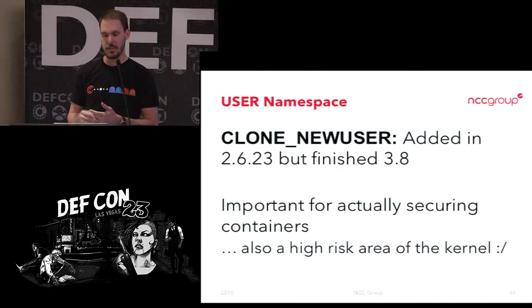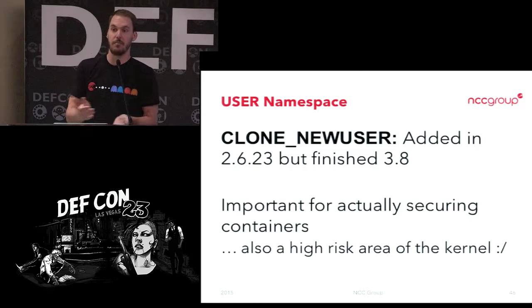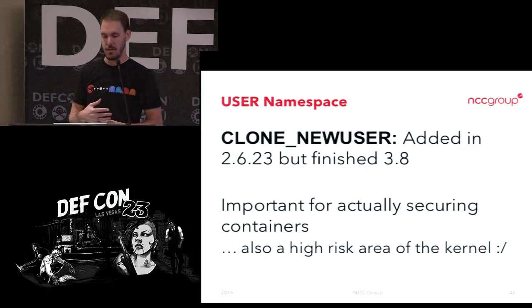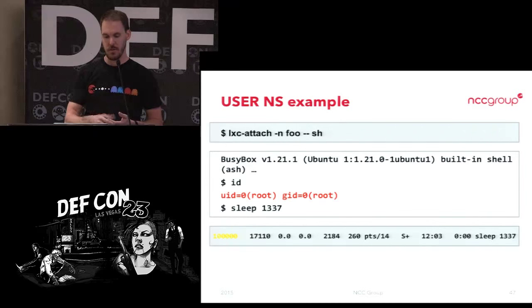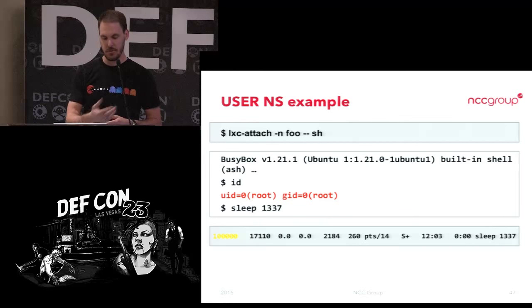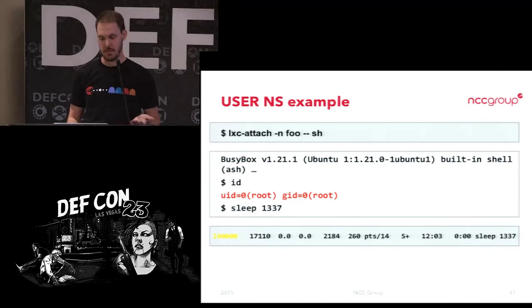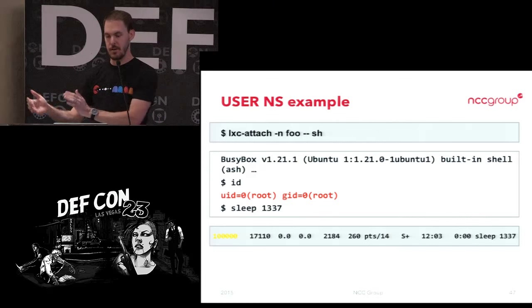That's also a high-risk area — you're controlling a lot of how the UID system works within the kernel and very sensitive areas, so there have been a few vulnerabilities using the user namespace to break things outside the context of containers. The way that looks: if you attach to a container and you're root inside, you run sleep, but outside of it you're actually UID 100000. It essentially just shifts all your UIDs up by some offset.